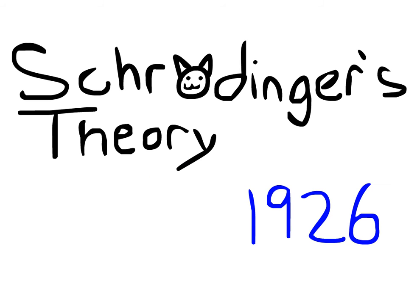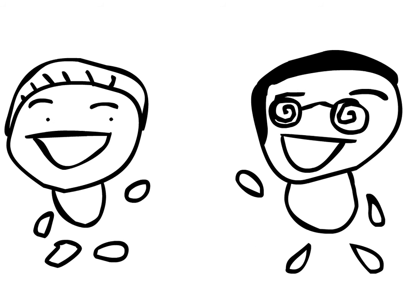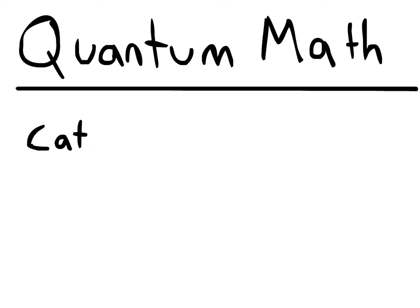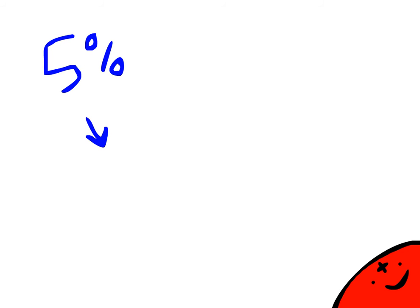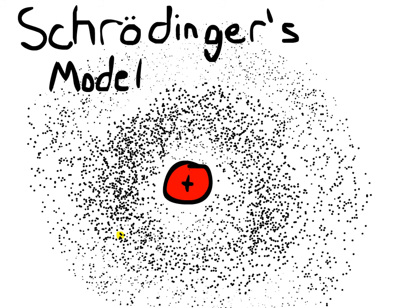Erwin Schrodinger, 1926. Schrodinger added on to Bohr's atomic theory by using quantum mechanics. He used mathematical equations to not find the location of an electron in the orbital, but instead to calculate the odds of where the electron goes. Erwin created the quantum mechanical model. This model shows everywhere where the electron could be. The diagram has clouded areas — the more heavily clouded, the greater the odds that the electron could be there.